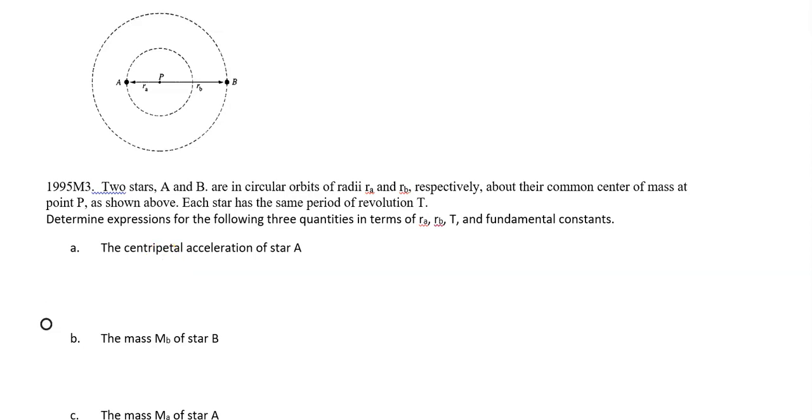So for part A, we want to find the centripetal acceleration. Our equation for a_c, and I always write my equations down first, is just v² over R. We want the a_c of star A. The velocity, we need it all in terms of R_A, R_B, T, and fundamental constants, so like big G and things like that are allowed.